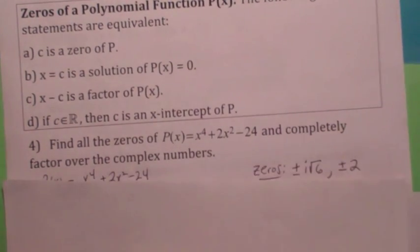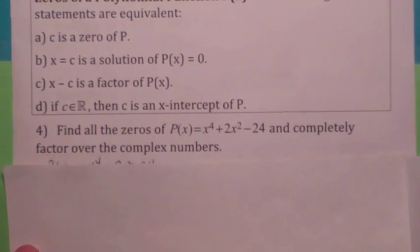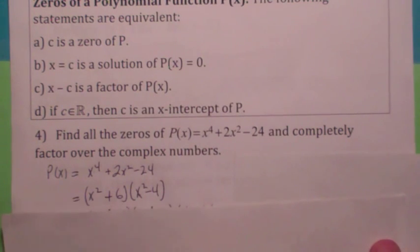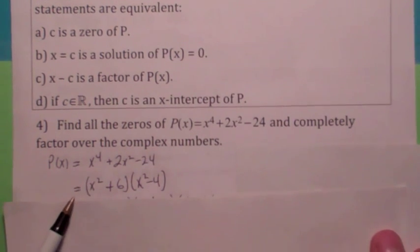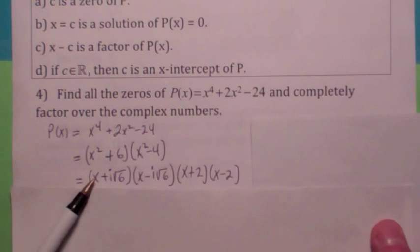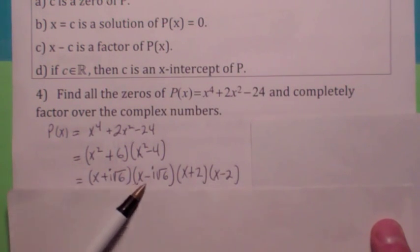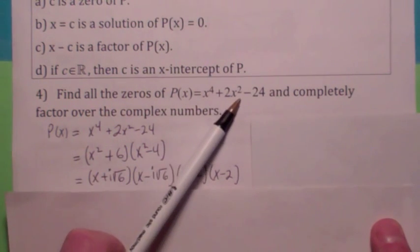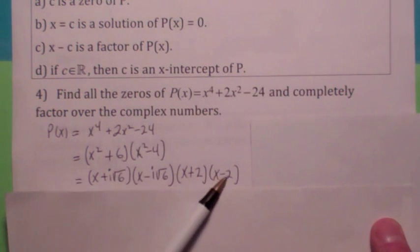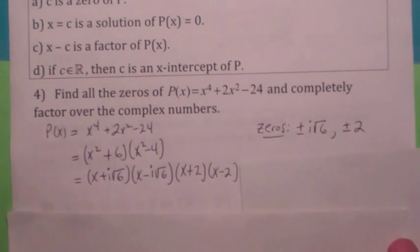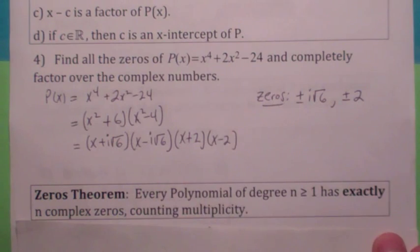Suppose you wanted to find all the zeros of this 4th degree polynomial function, and you wanted to factor it over the complexes. Well, sometimes you might be able to factor — you don't always have to use long division here. This one does factor, and then you can factor each of those factors more. Notice, x squared plus 6 factors into x plus i radical 6 times x minus i radical 6. So, we've demonstrated what the theorem says: this polynomial function of degree 4 can be factored into 4 linear factors. The zeros are plus or minus i square root of 6 and plus or minus 2.